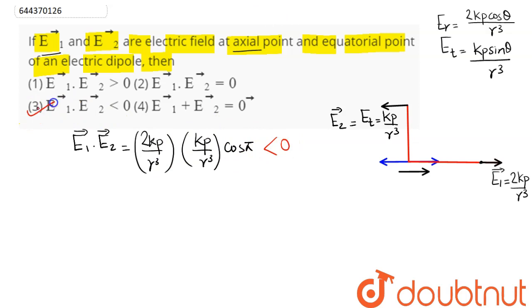Hence amongst the 4 options, E1 dot E2 is less than 0. In 4th option E1 vector plus E2 vector is 0 vector, but when added up one is plus i cap and other is minus i cap. On adding this comes as kp divided by r cube i cap, so it is not 0. Option 4 is not correct. Hence the correct option is option number 3.